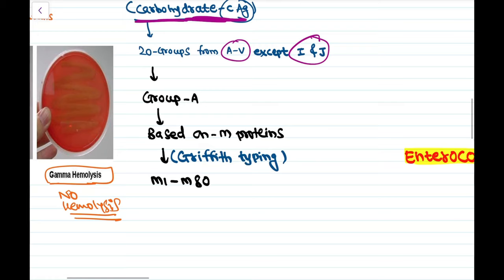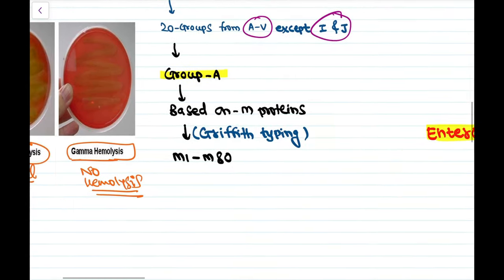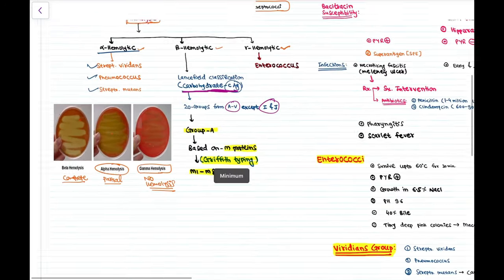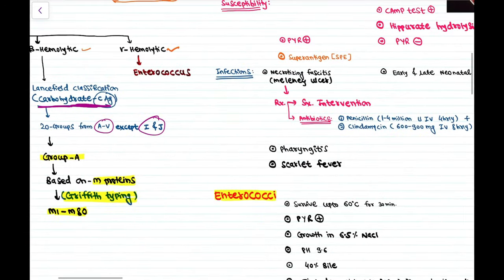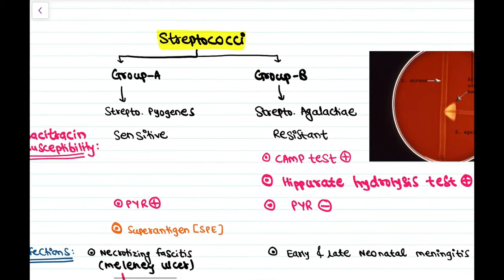Group A Streptococci are further divided into M1 to M80 subtypes based on M proteins. This subtyping is called Griffith typing of Group A Streptococcus.